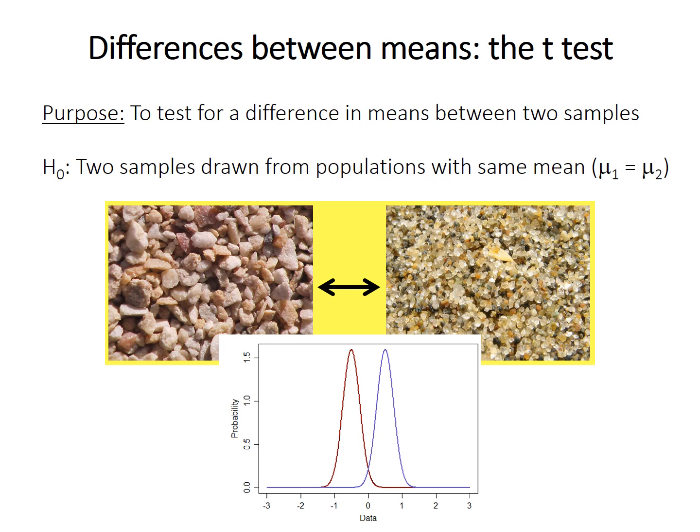The goal of a t-test is to compare the mean between two samples. Statistical methods test a null hypothesis, which must be a unique testable statement with only one possible outcome. When comparing means, the null hypothesis is typically that the two samples come from populations with the same mean — that population mean one, mu one, equals population mean two.